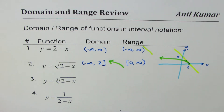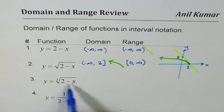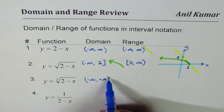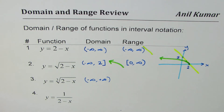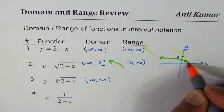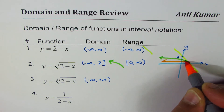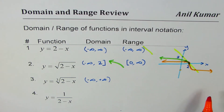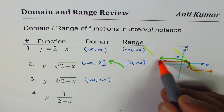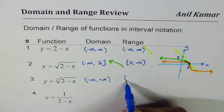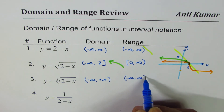For a cube root function, there is no restriction — x can be anything, so the domain is from -∞ to +∞. Let me sketch it: at x = 1, the cube root of 1 is 1, and it is symmetric. The range also has no restrictions, going from -∞ to +∞, as there is no horizontal asymptote.